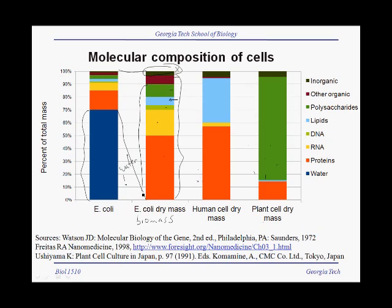Comparing E. coli to humans, we see that humans have a comparable amount of protein, but much less DNA and RNA, and a lot more lipids — due to the fat in our cells. This is fairly typical, not just of humans, but of most mammalian cells.